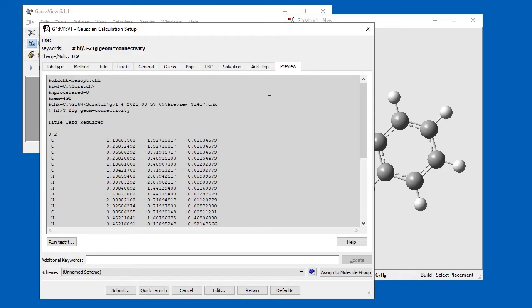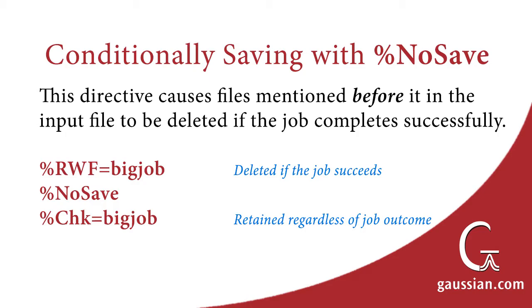Gaussian includes a way to provide intuitive names to intermediate files while still deleting them at the end of a successful calculation. The %NoSave directive functions as a dividing line within the Link0 file specifications in an input file. Files named before it appear — above it in the input file — will be assigned the specified name but deleted if the job succeeds. Files named after it — below it — are retained. For example, using these directives, the read-write file and checkpoint file will both receive the base name BigJob, but only the checkpoint file will be kept.